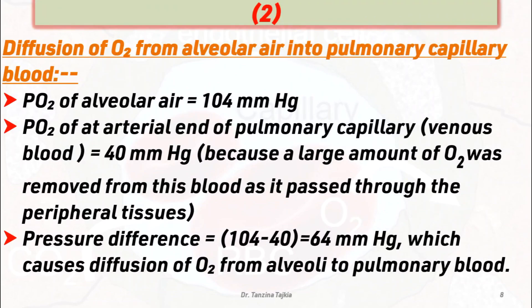Second, diffusion of oxygen from alveolar air into pulmonary capillary blood. The partial pressure of oxygen in alveolar air is about 104 mmHg, and the partial pressure of oxygen at the arterial end of the capillary — that is, venous blood — is about 40 mmHg, because a large amount of oxygen was removed from blood as it passes through the peripheral tissues. So the pressure difference is about 64 mmHg, which causes diffusion of oxygen from alveoli into pulmonary blood.